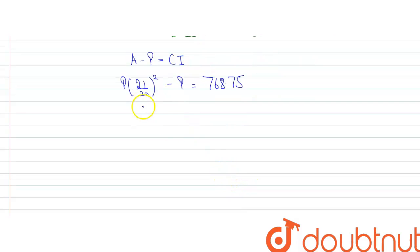From this equation we will get 441 divided by 400P minus P is equal to 768.75.